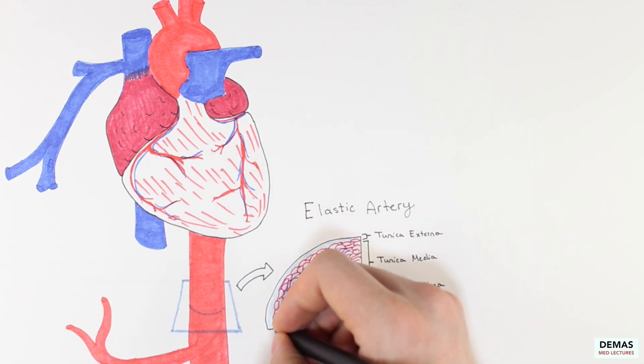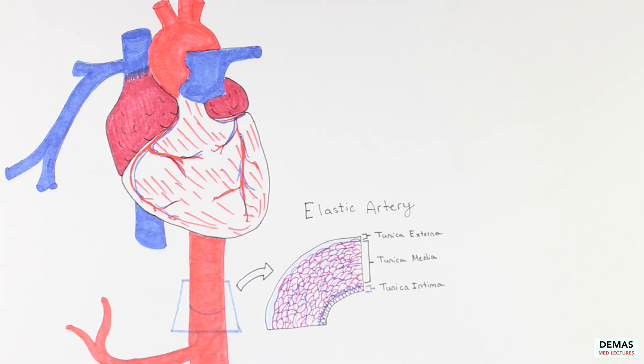Elastic arteries also have two additional layers of elastic fiber bands between the tunica interna and media, as well as the tunica media and externa, called the internal lamina and external lamina, respectively.